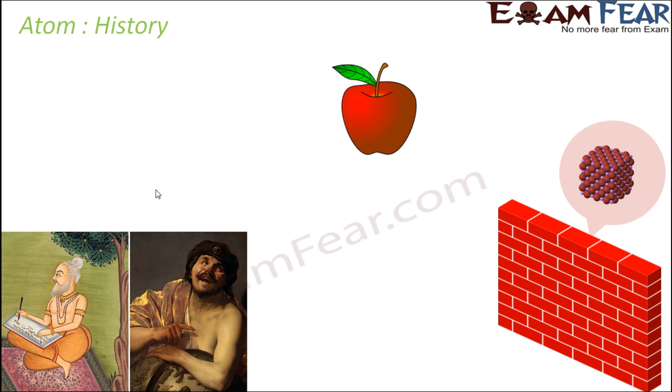So before we understand atom in detail, let's understand the history of atom. How this word atom came. There was a Maharishi, Maharishi Kannad. This guy is Maharishi. And he was an Indian philosopher. And this Indian philosopher in almost 500 BC, almost 2500 years before today's day, he postulated. That time the science experiments were not that much. So all postulates that time, it was all postulates. It was all theoretical. Or theory.